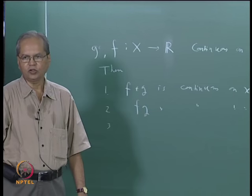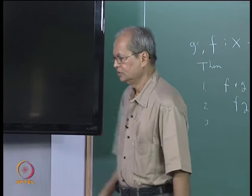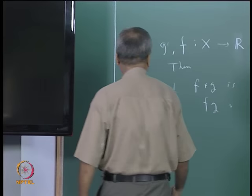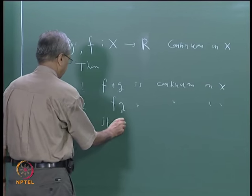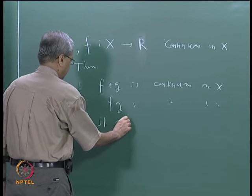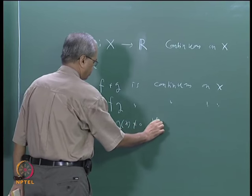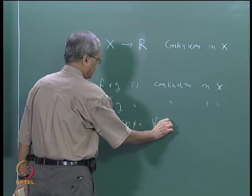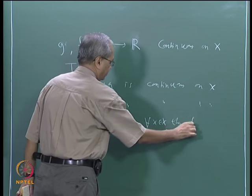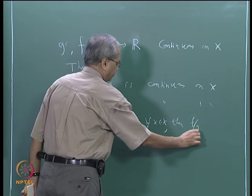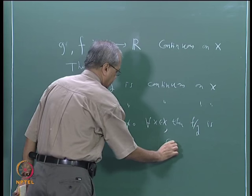Second, fg is continuous, and if g of x is not 0 everywhere in x, then f by g is also continuous. Here, continuous means continuous on x everywhere.